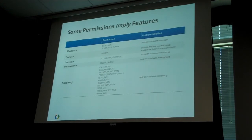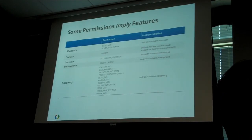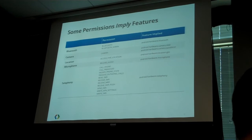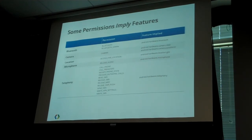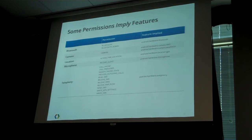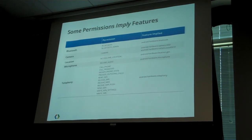There's one tricky thing with Android: some permissions actually imply features. If you include any of the permissions in this list, they'll actually imply features that aren't supported by Google TV. Bluetooth is an obvious one — none of the current Google TV devices support Bluetooth. Camera — none of the devices have cameras built in. Location — this is only fine location, which is related to GPS. Microphones — the devices currently don't have microphones. And then a whole suite of telephony features — no making calls on your Google TV. So including any of these permissions will make your app unavailable for Google TV users to download from Google Play.